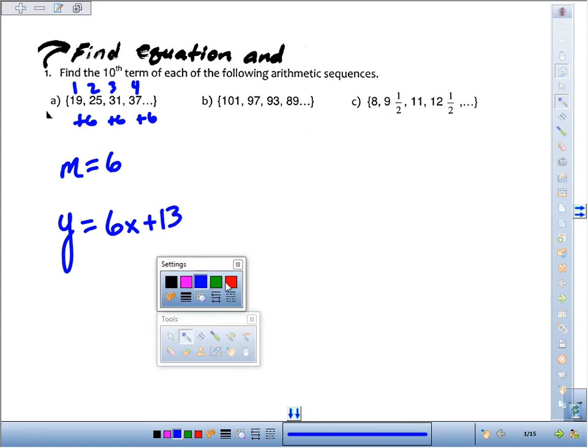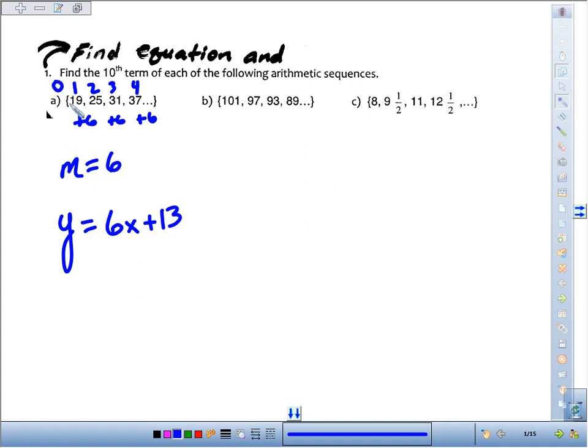Another way to think about it is the y-intercept is when x is 0, what's your y-value? We'll find the zeroth term. We'll work backwards one. 25, 19, that would be 13.